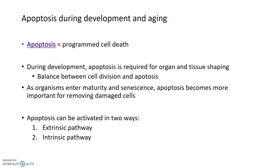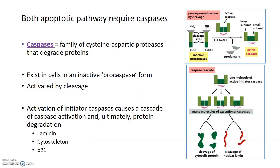Apoptosis can be activated in two different ways: through the extrinsic, or extracellular signaled pathway, or through the intrinsic, or intracellular signaled pathway. Both pathways require a particular type of protease known as a caspase. Caspases are cysteine aspartic proteases — the 'C' comes from cysteine, the 'ASP' from aspartic acid, and 'ase' means it's an enzyme. Essentially, caspases are proteases or protein-degrading enzymes that cleave at cysteine and aspartic acid residues.